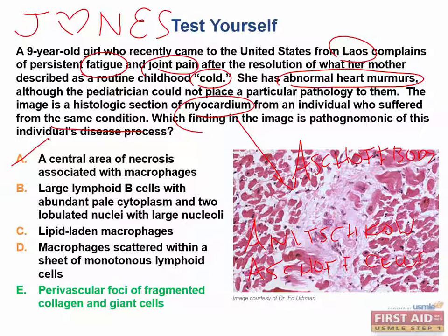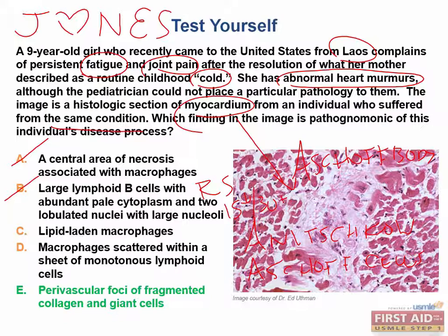Remember, sarcoidosis is characterized by non-caseating granulomas. Answer B is not correct because large lymphoid B cells with abundant pale cytoplasm and two lobulated nuclei with large nucleoli describes Reed-Sternberg cells — the owl-eye-looking cells that are CD15 positive and CD30 positive. These are classic for Hodgkin's lymphoma, and this patient doesn't have any signs or symptoms of lymphoma.